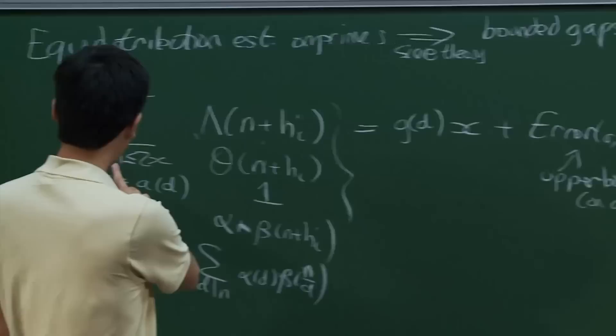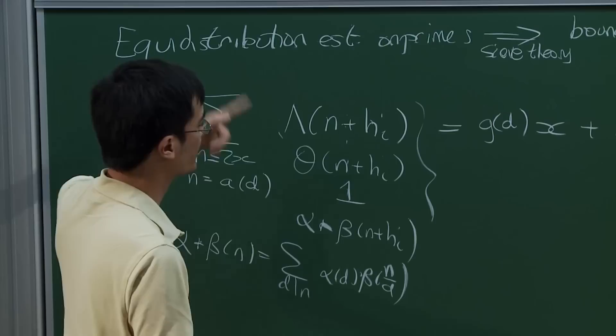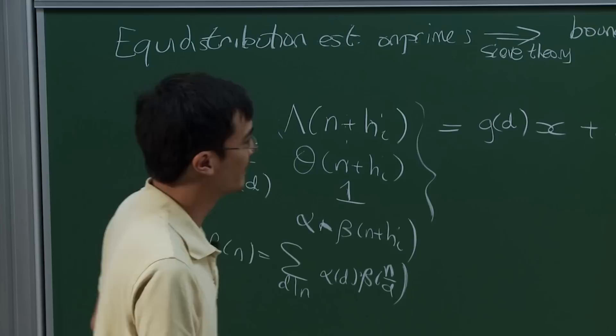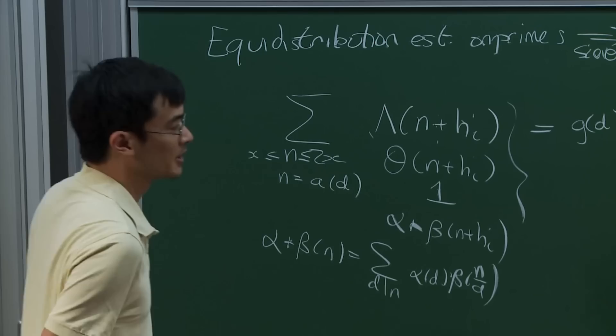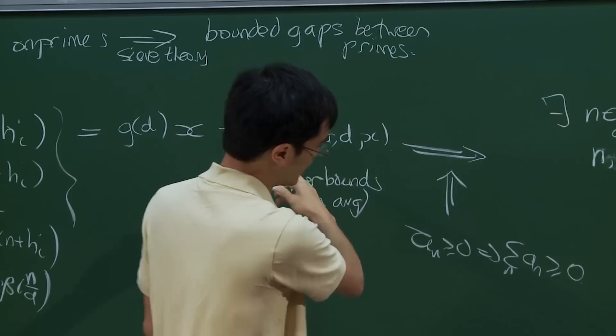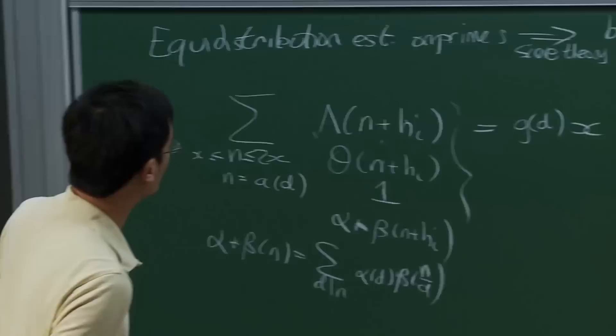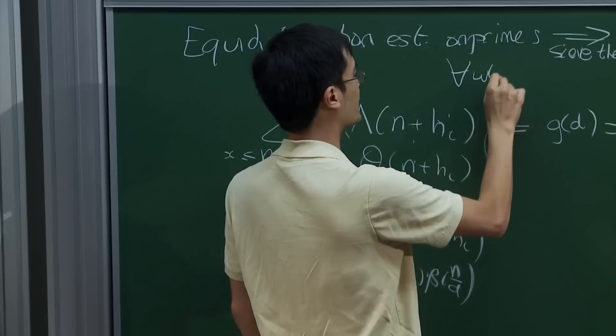A long time ago, around the 80s, Selberg pointed out this parity obstruction, which prevents proving the twin prime conjecture from sieve theoretic means, but it also prevents proving a bound of four. Sieve theory is linear in n—nothing interesting happens to n when you do sieve theory; you just take linear combinations of axioms but never mess with the n sum. And so everything here is linear in n. Because it's linear in n, you can replace the summation over n with a weighted sum over n, and everything still works.